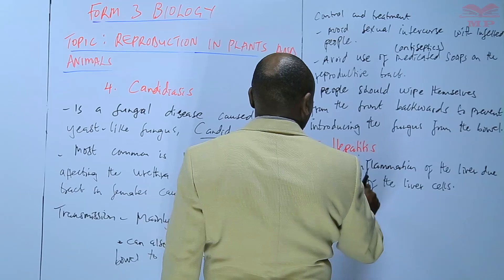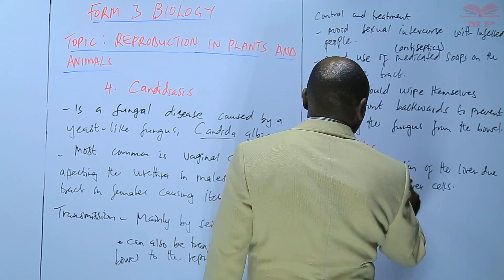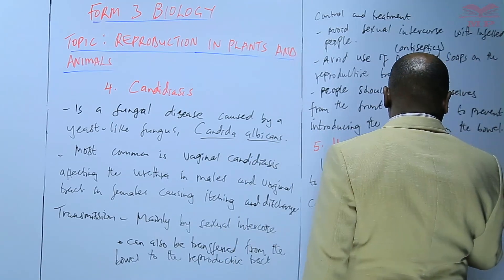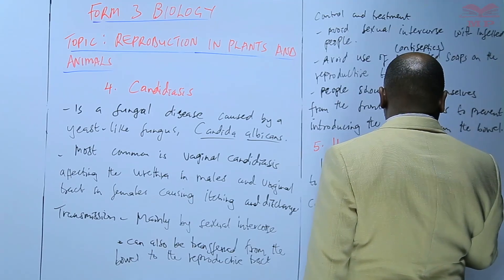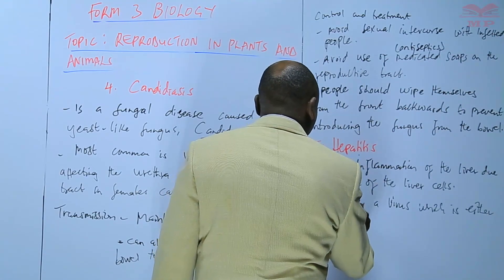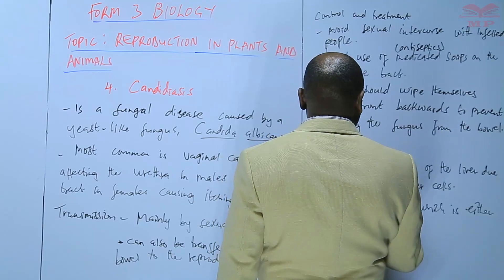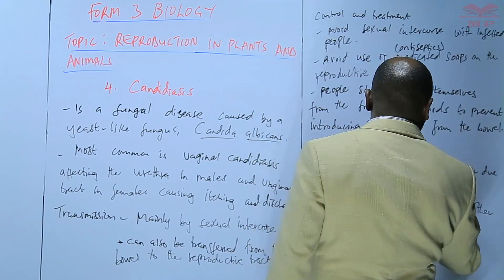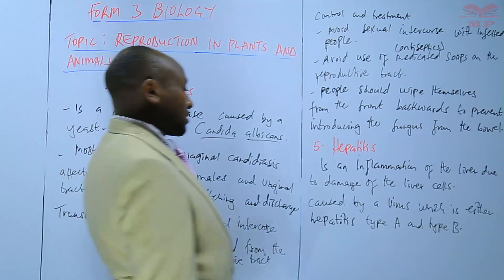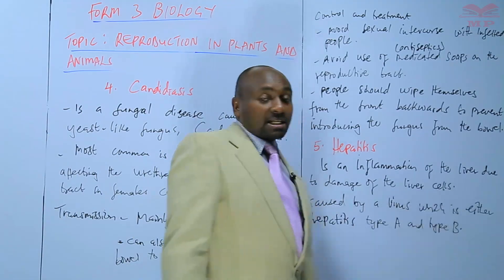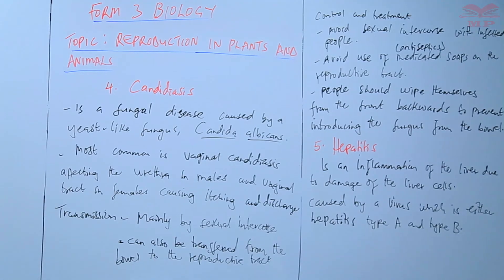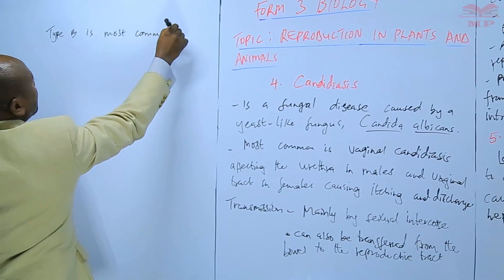Hepatitis is caused by a virus, so this one is viral. The virus is either hepatitis type A or type B — those are the most common types. Hepatitis virus type B is the most common, especially in adults.